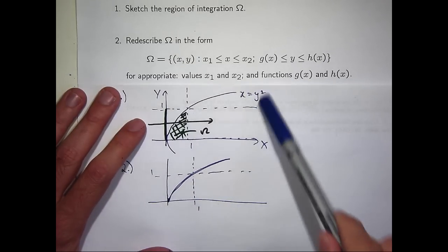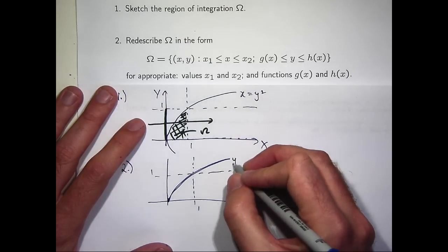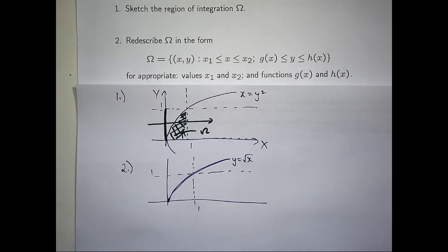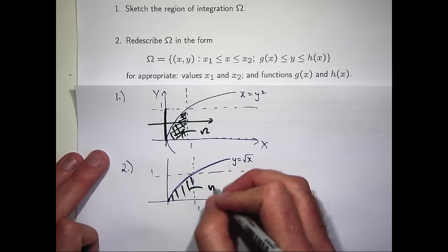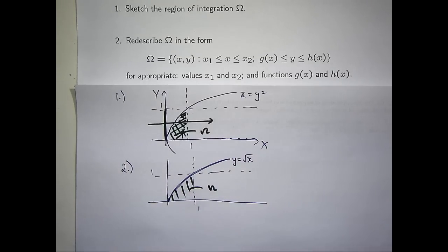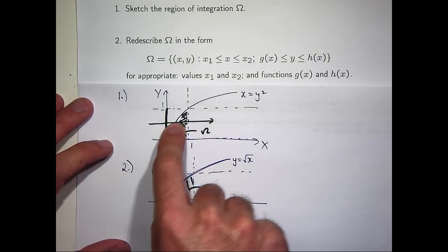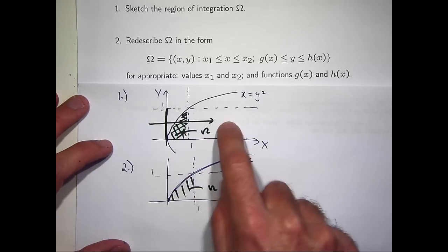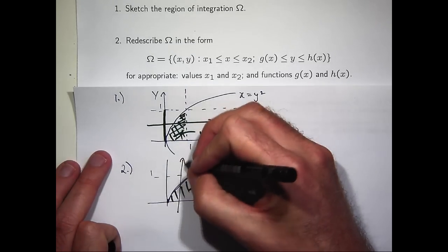So instead of x equals y squared here, I'm going to flip that and have y as a function of x. So this is the region that we're interested in. Up here, I used a horizontal line and looked when does it cross into the region and when does it cross out of the region. What I want to do in the second diagram is use a vertical line.